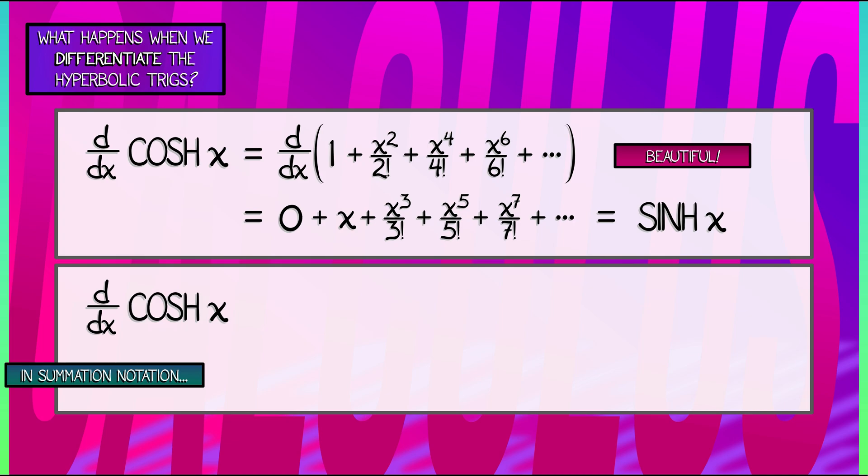Okay. Now, just for completeness, let's do this using summation notation. Let's see what happens. I'm going to take the derivative of the sum k goes from 0 to infinity x to the 2k divided by 2k factorial. What is that?